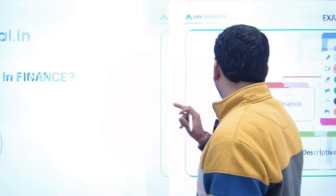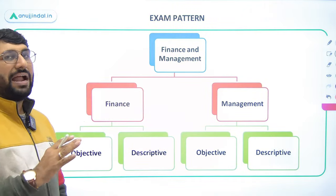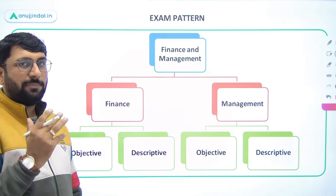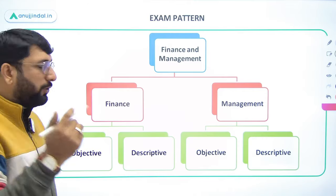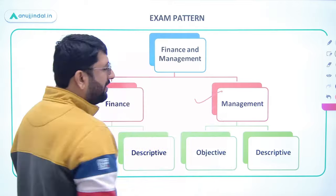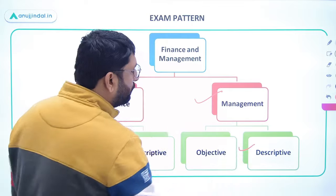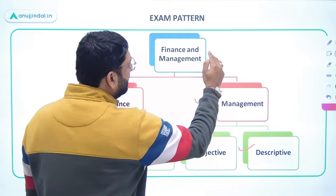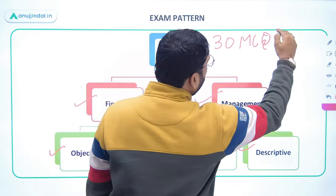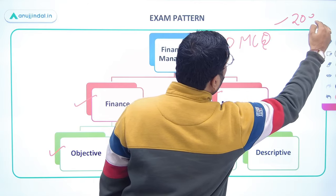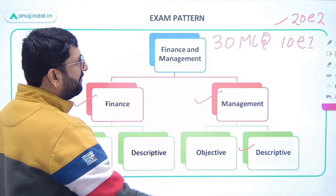Before I get into the intricacies, let's talk about the exam pattern in Phase 2, specifically with respect to finance and management. The finance and management subject has two segments — the finance segment and the management segment — and in both there are objective type questions and descriptive type questions. There are 30 MCQ questions in total including both finance and management, of which 20 questions are of 2 marks each and 10 questions are of 1 mark each.